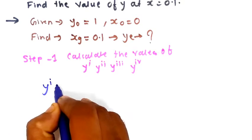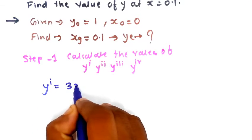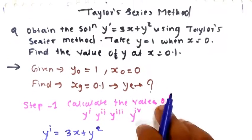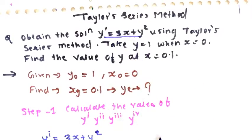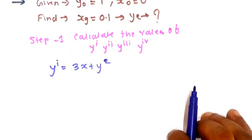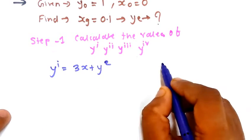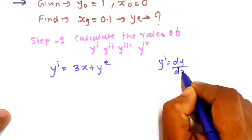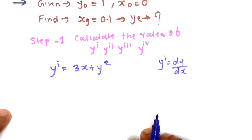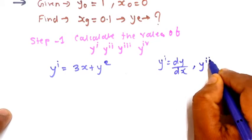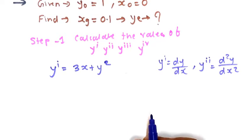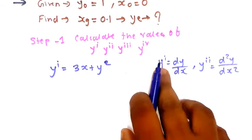y1 is given as 3x + y², which is the original equation y' = 3x + y². So y1 is nothing but dy/dx. Similarly, y2 will be d²y/dx², and so on. This is the notation used in this problem.